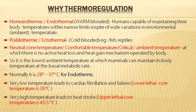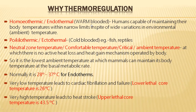Depending on how organisms regulate temperature, animals are divided into two categories: homeothermic and poikilothermic. Homeothermic organisms are also called endothermal or warm-blooded. Poikilothermic organisms are also called ectothermal or cold-blooded. Examples of homeothermal and endothermal organisms are birds and mammals, which can maintain their body temperature within a narrow limit range with a stable body temperature.